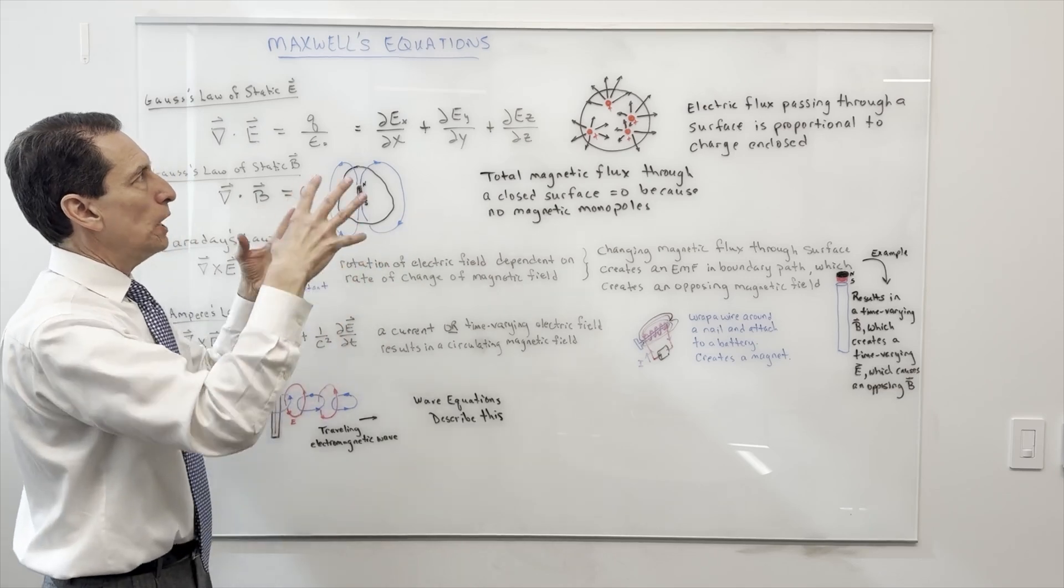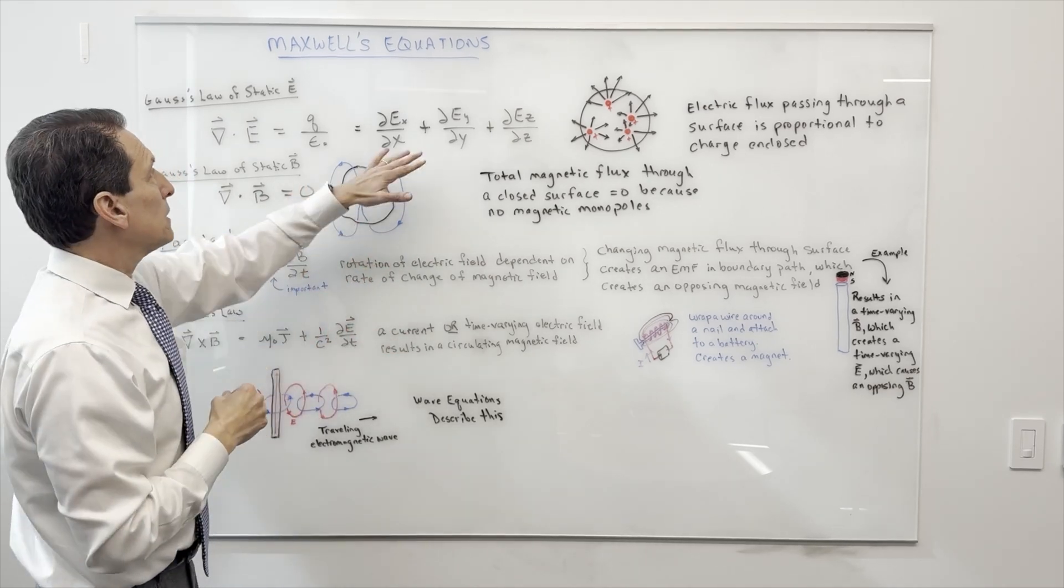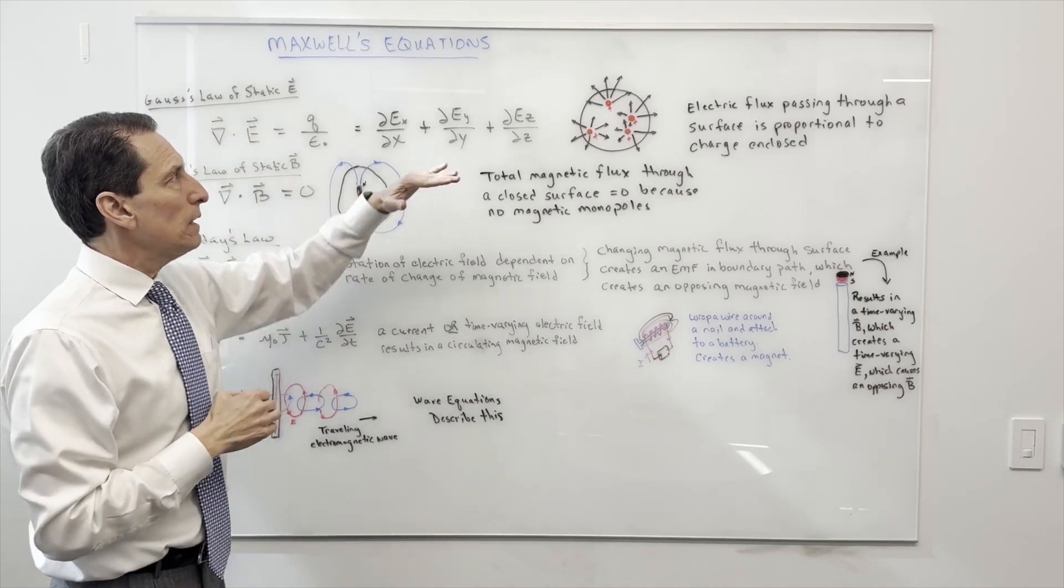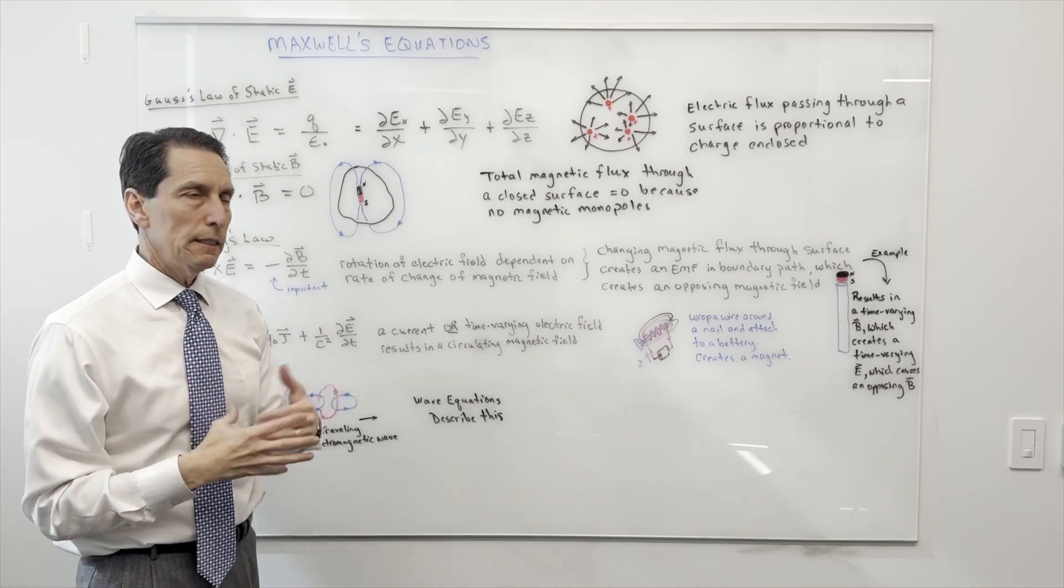It's really just measuring how they change with respect to the space that you're in, and that's going to equal that charge density divided by a constant. I think that one is fairly straightforward and easy enough to understand.